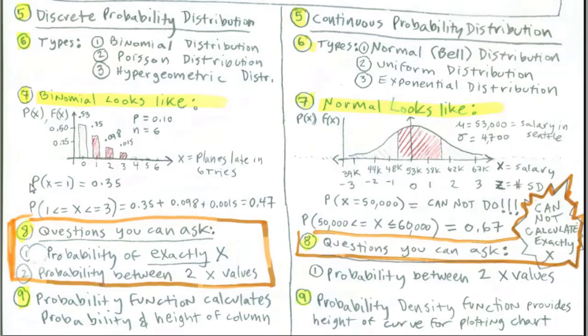And as such, we were allowed to say, what's the probability of exactly one plane late in six tries? It was 0.35. That came from the height of this. We were also allowed to ask, what's the probability that random variable x counting late planes in six tries was between one and three? We simply added the height of the columns or the probabilities to get our total probability. So last chapter, we could calculate the probability for exactly an x or between two x.